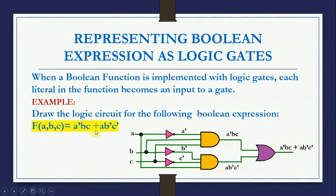Since there are three literals A, B, and C, we draw three inputs. For the first term A̅BC: to get A bar, we apply a NOT gate to A. Then A bar, B, and C are connected as three inputs to an AND gate, giving output A̅BC.